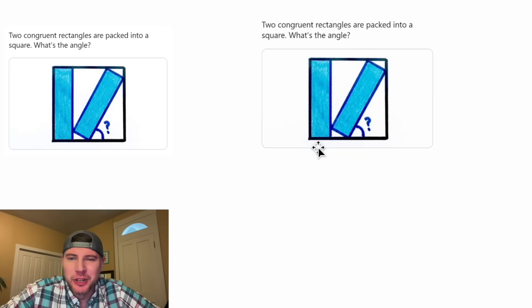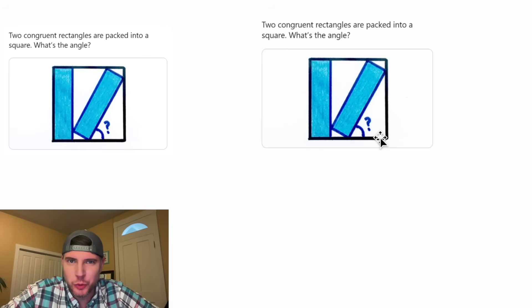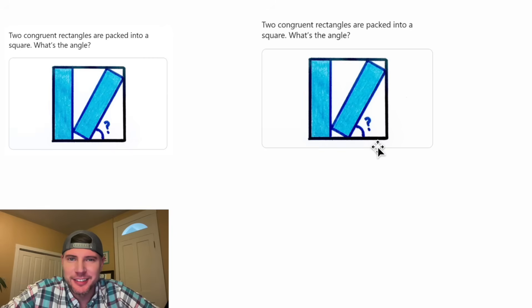Hey guys, this looks like a fun one. We're given two congruent rectangles packed into a square, and it's asking for the measure of this angle. This is day six of the 2025 Advent calendar.